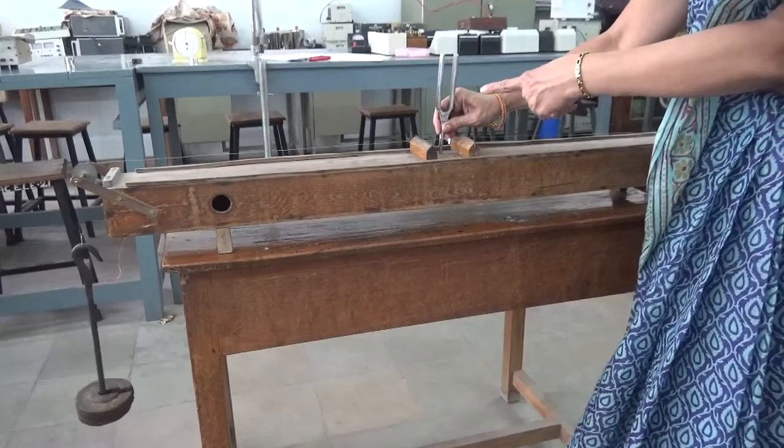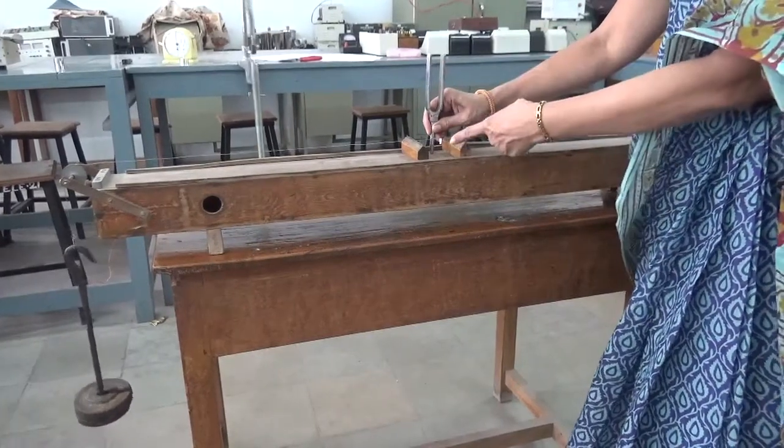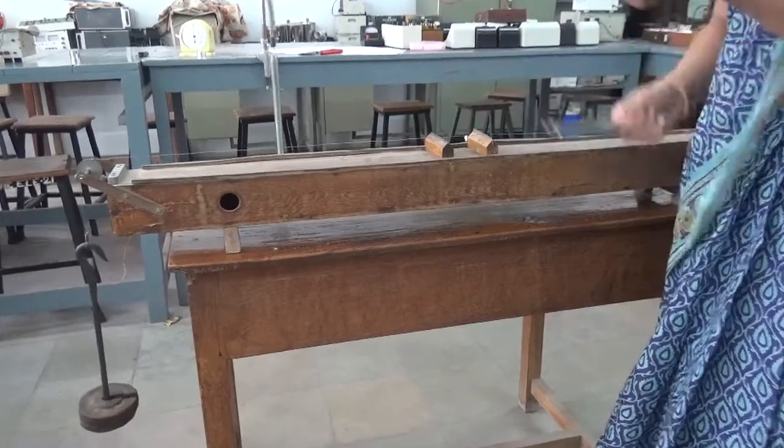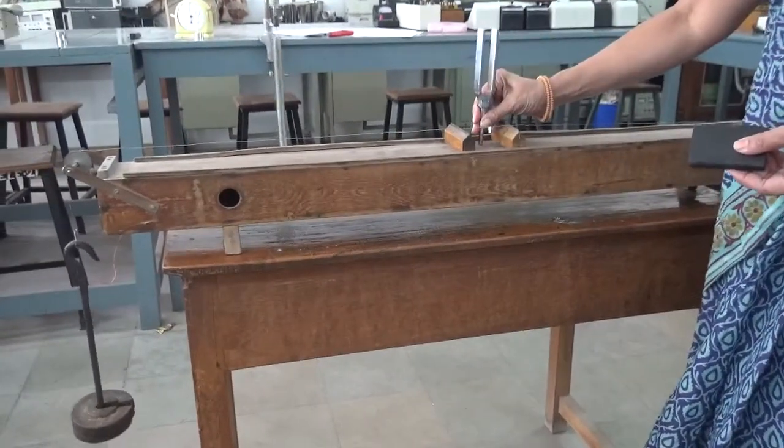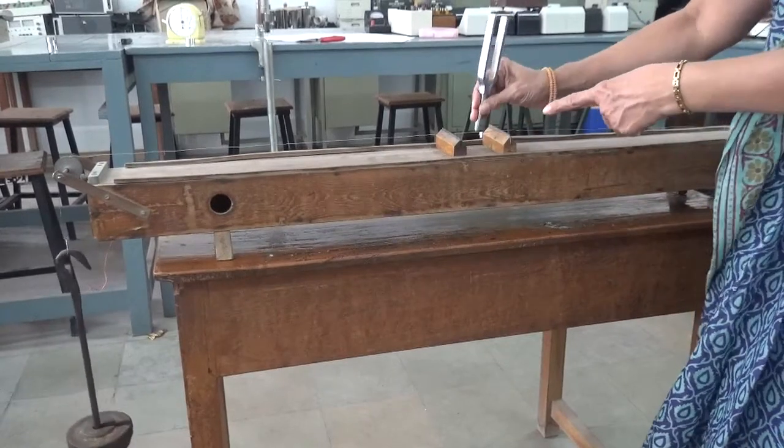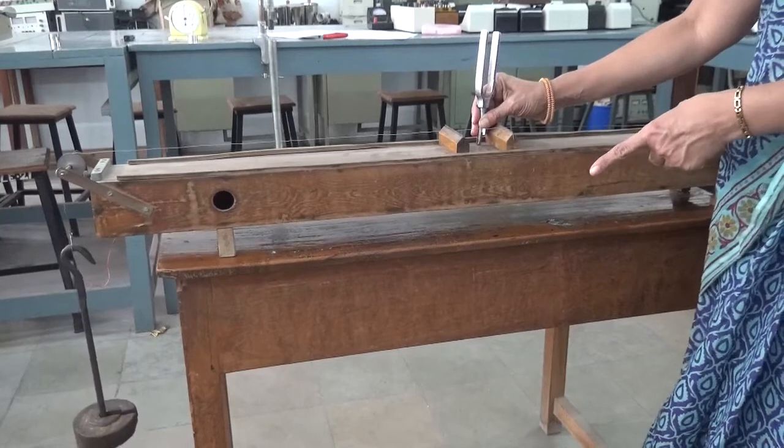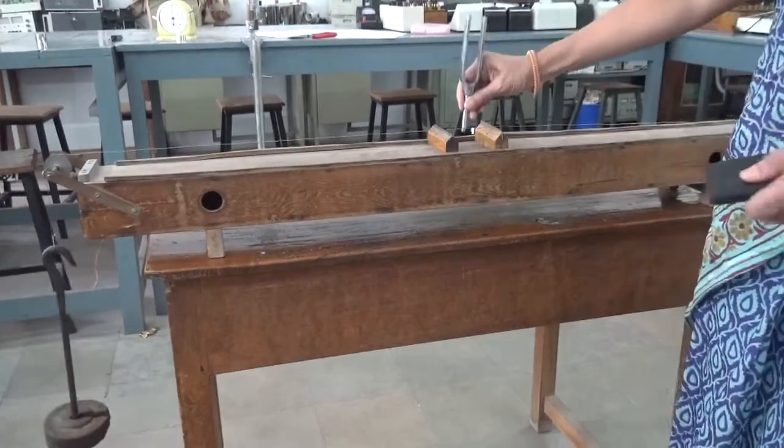What is actually happening is this length of the segment undergoes vibration in tune with the vibrations of the tuning fork. If this frequency matches with the frequency of the tuning fork, we can say that resonance has taken place. Resonance is a phenomenon where two vibrating bodies' frequencies match.